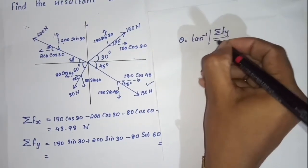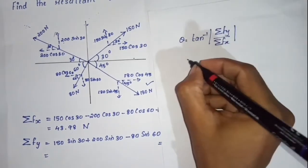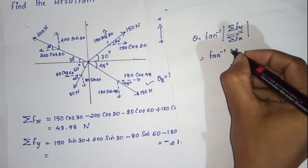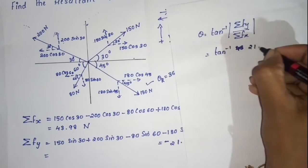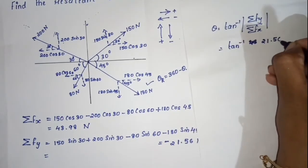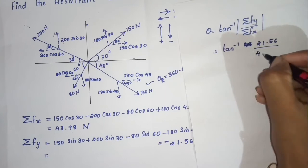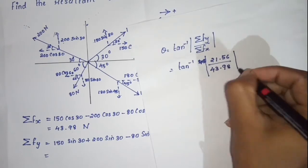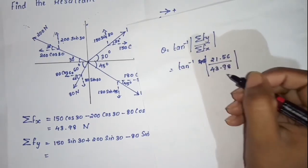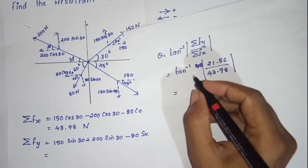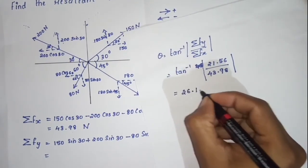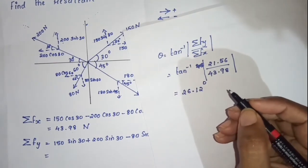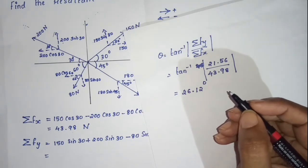The direction theta equals tan inverse of sigma Fy divided by sigma Fx. That is tan inverse of 21.56 divided by 43.98. The answer is 26.12 degrees. This is the angle theta of the resultant with respect to the horizontal line.